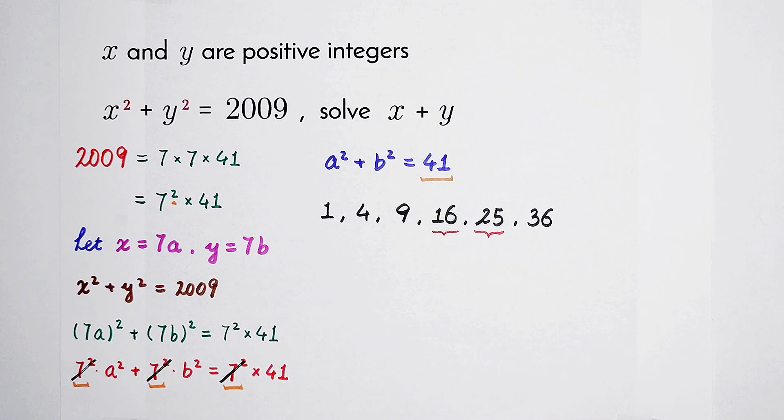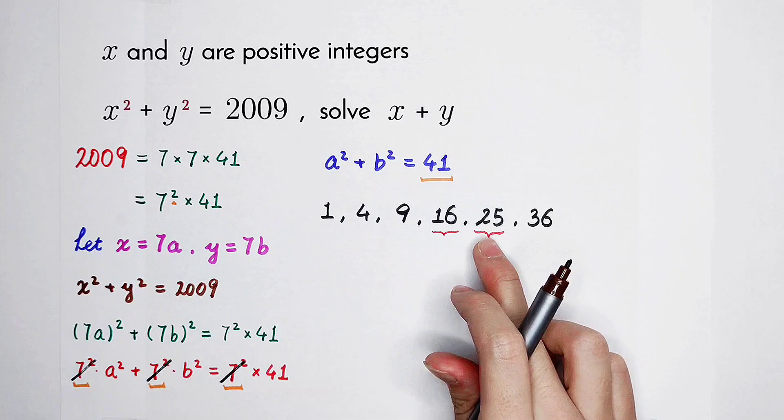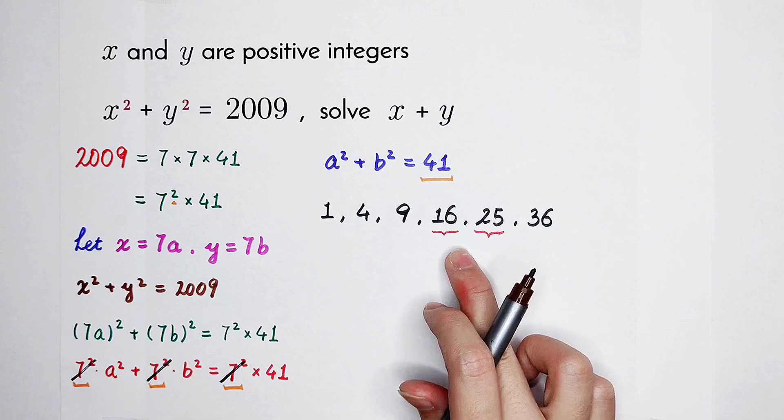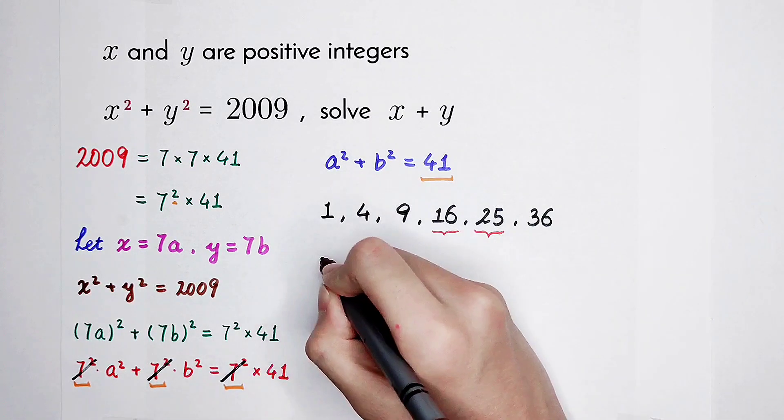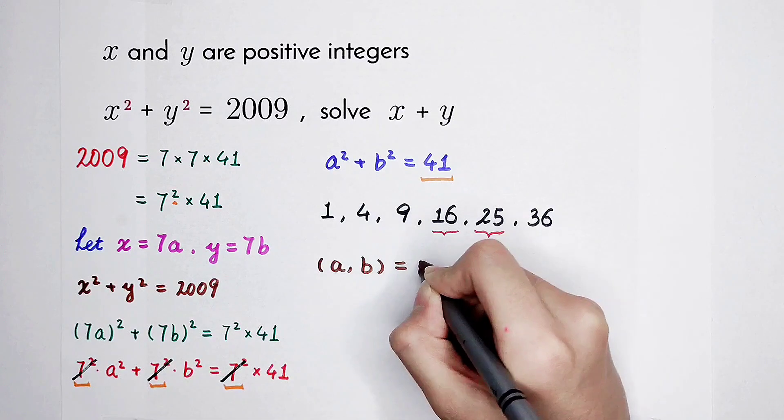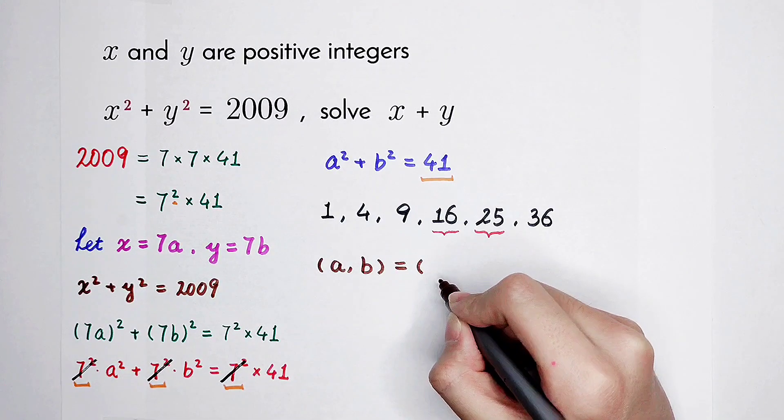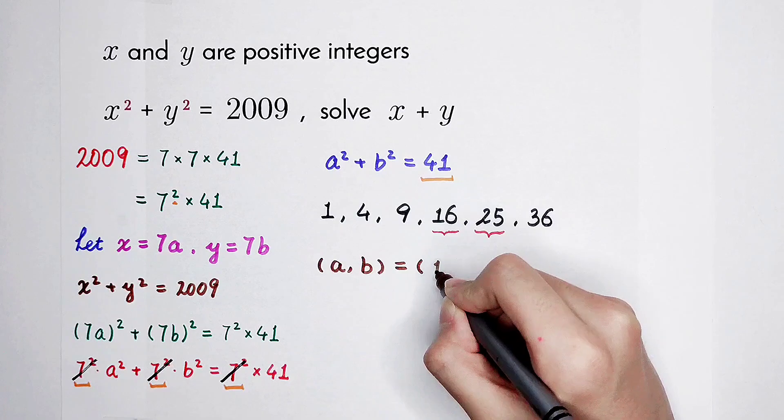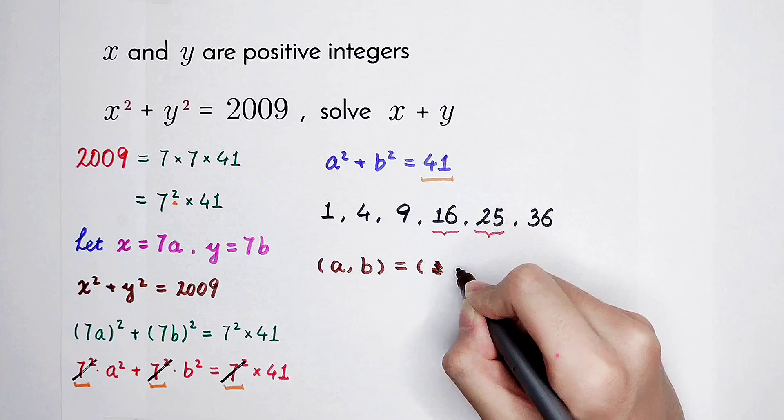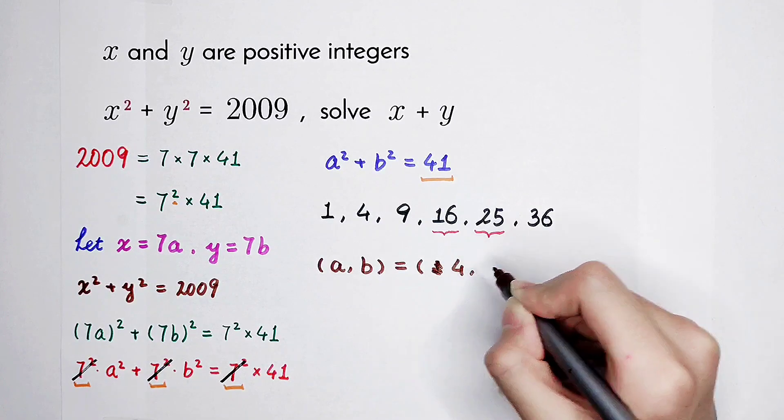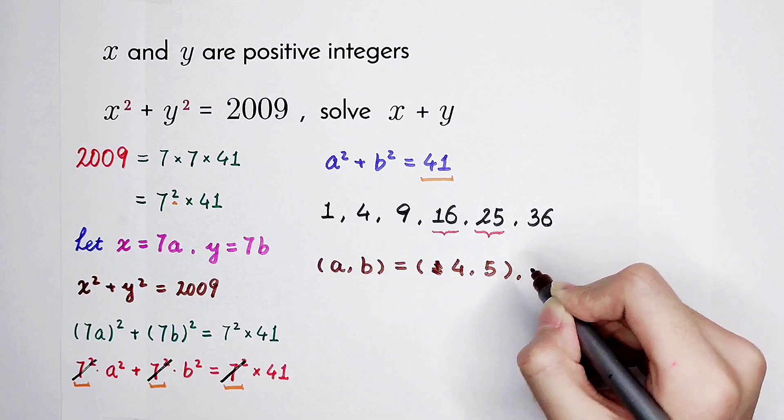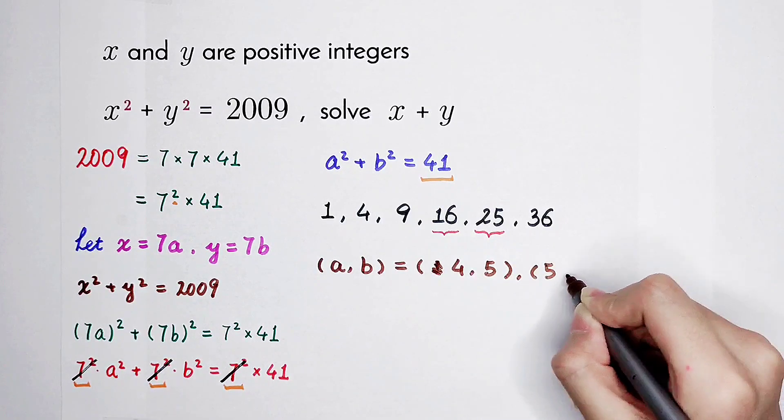So a squared is 16, b squared is 25. Or a squared is 25, b squared is 16. So our solution pairs of a, b. 2 solution pairs of a, b. Now 16. a squared is 16, so a is 4. b squared is 25, b is 5. Or a is 5, b is 4.